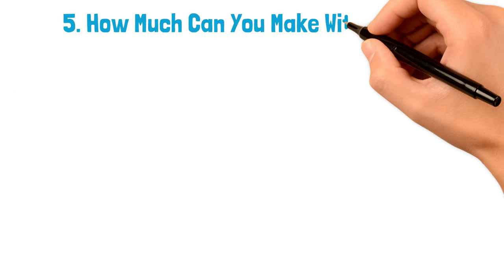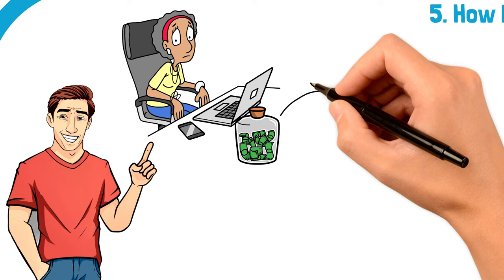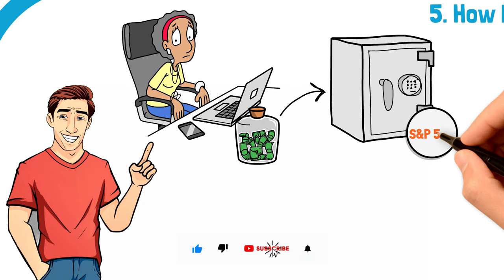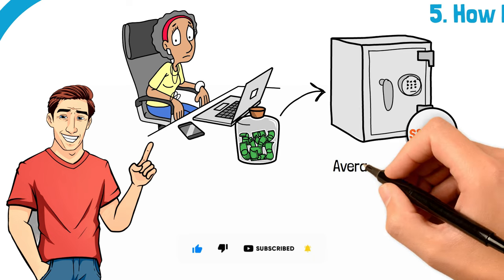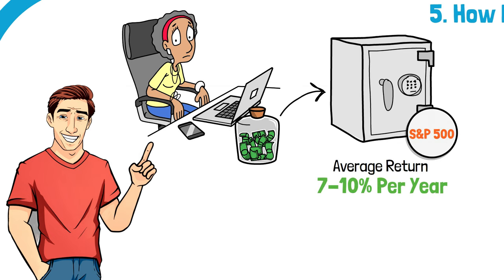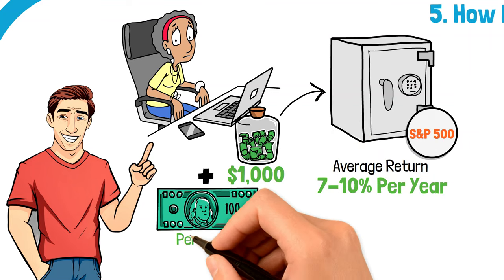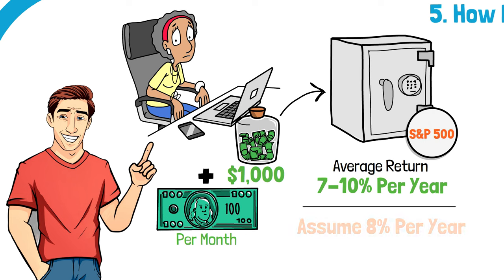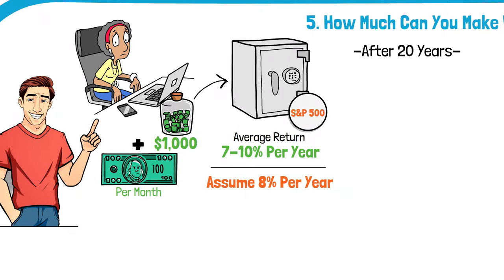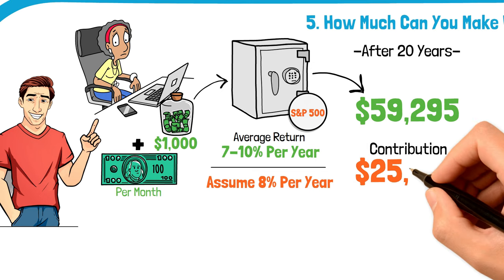Now to the most awaited question: How much can you potentially make by investing in ETFs? Historically, the stock market has returned about 7 to 10 percent per year on average after adjusting for inflation. Say you start with an initial investment of $1,000 in a Vanguard ETF and plan to add $100 every month. Assuming an average annual return of 8 percent, how much would you have after 20 years? Through the power of compounding, your investment would grow to about $59,295. That's your original $25,000 contribution growing by over $34,000 just from returns.